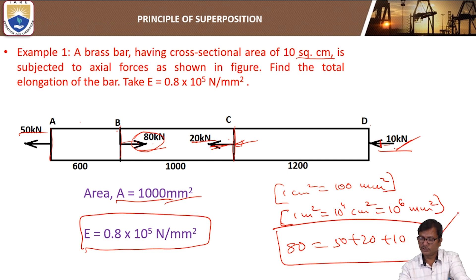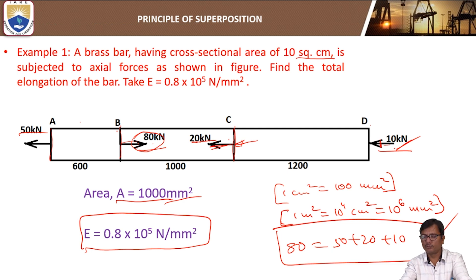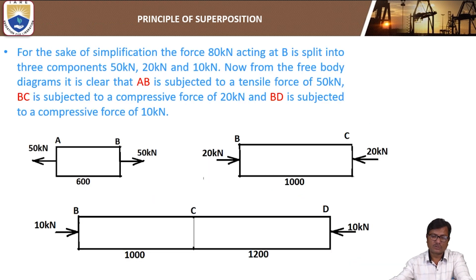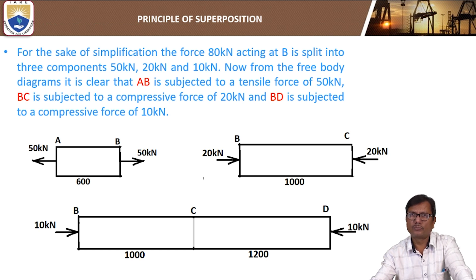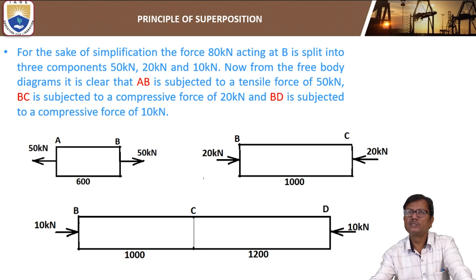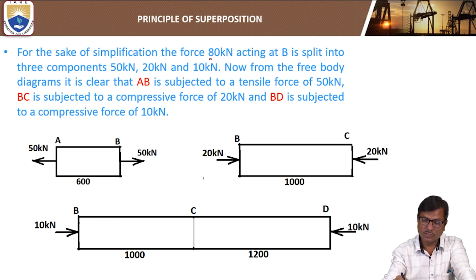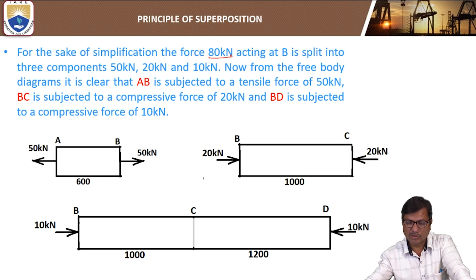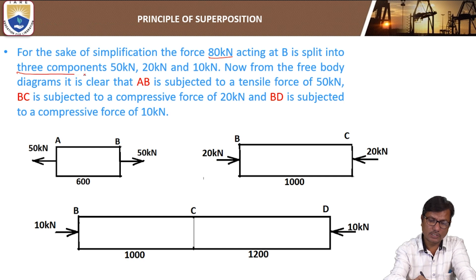The equilibrium condition requires the sum of forces towards the right to equal the sum of forces towards the left: 80 = 50 + 20 + 10. This must be satisfied; otherwise the body will not be in equilibrium and will keep moving — an unbalanced force makes it move. In this type of problem, we simplify by splitting the forces using the principle of superposition. The 80 kN force at B is split into three parts: 50, 20, and 10.